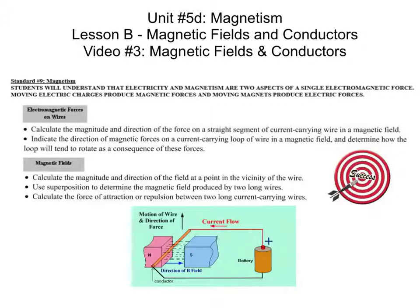Here we go with Lesson B of Unit 5D, Magnetic Fields and Conductors. As we've mentioned previously, magnetism and electricity are very closely connected. They're really two sides of the same coin that we call electromagnetism. We're going to be exploring the relationship between electricity and magnetism in conductors in this video.